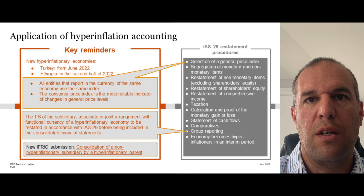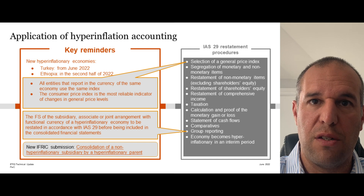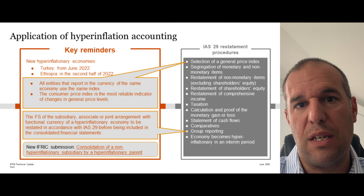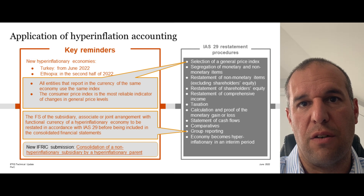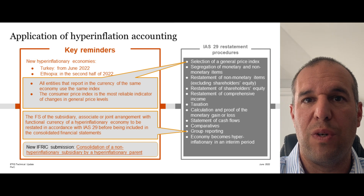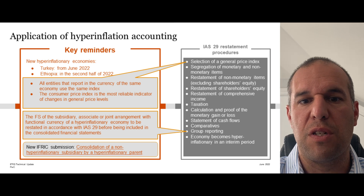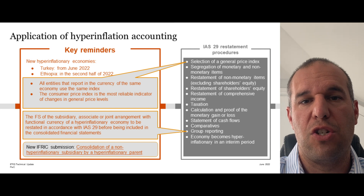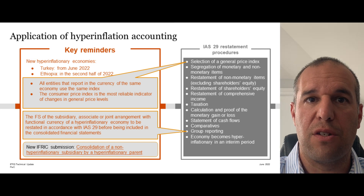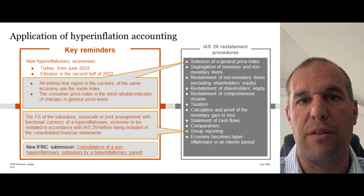Entities with subsidiaries whose functional currency is hyperinflationary should remember key differences between the accounting by the parent and the subsidiary. The statement of financial position and results of the subsidiary are restated in accordance with IAS 29 before being included in the consolidated financial statements. When including that foreign subsidiary in consolidated financial statements, you need to use the closing rate for both the balance sheet and the income statement. The subsidiary's comparatives are not restated in the parent's consolidated financial statements, whereas in the subsidiary's own financial statements they will restate their comparatives in accordance with IAS 29.